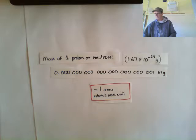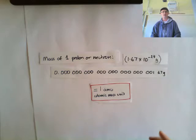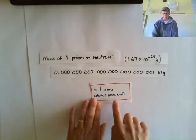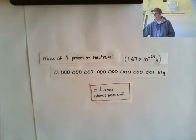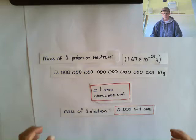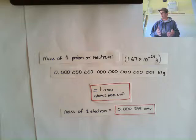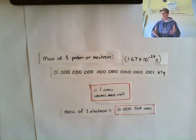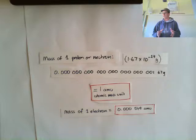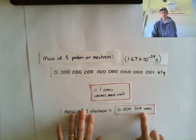One AMU is a lot easier to use than that tiny decimal number. One proton and one neutron both weigh around one atomic mass unit. Electrons, on the other hand, are much, much smaller — the mass of one electron is 0.000549 AMU. For this reason, when talking about the mass of atoms, we usually just add up the protons and the neutrons to find out how many AMUs that atom weighs, and we don't even worry about the electrons.